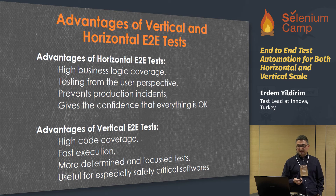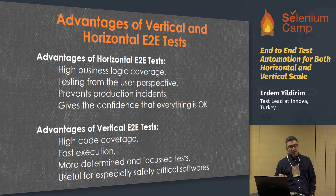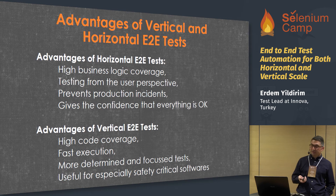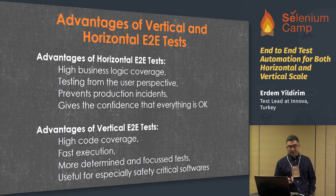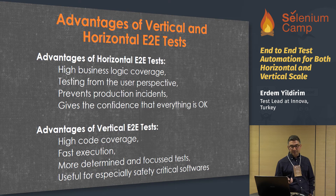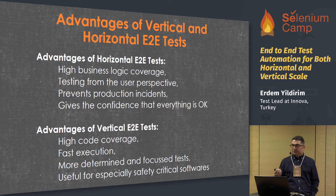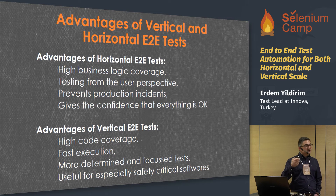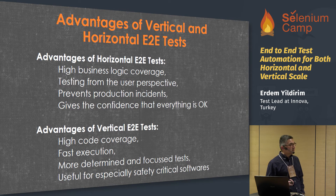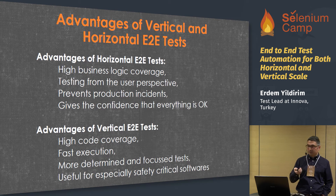Advantages of horizontal ETU tests: covers high business logic coverage, testing from the user perspective, prevents production incidents, and gives confidence that everything is okay. Advantages of vertical ETU tests: high code coverage, fast execution, more determined and focused tests. It's especially useful for safety-critical software — for example, if you have software running on a plane or helicopter and you are using the DO-178B standard, your coverage should be 100%. So this is the ideal solution.